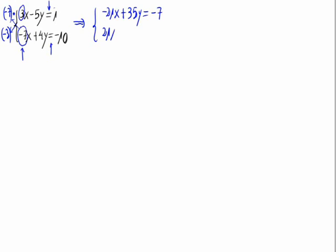And the second one minus 3 times minus 7x which gives us 21x minus 3 times 4y which gives us minus 12y equals minus 3 times minus 10 which gives us 30.